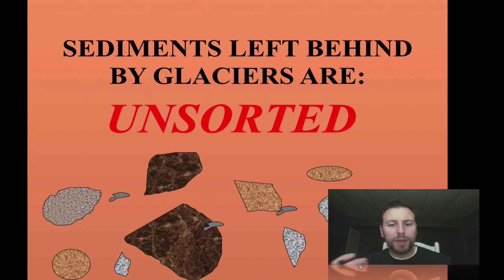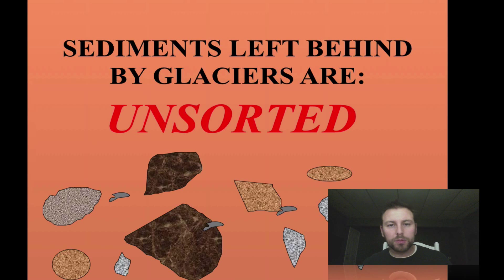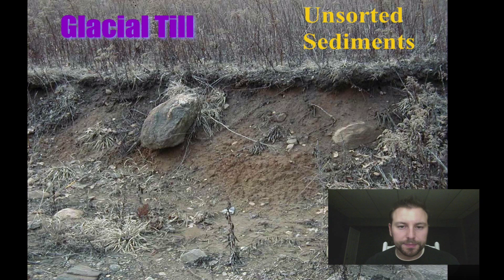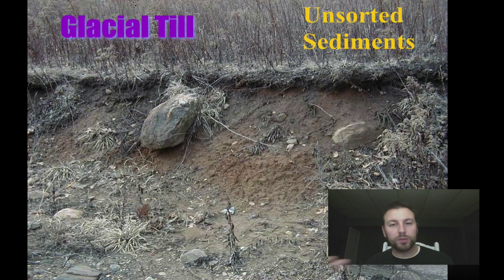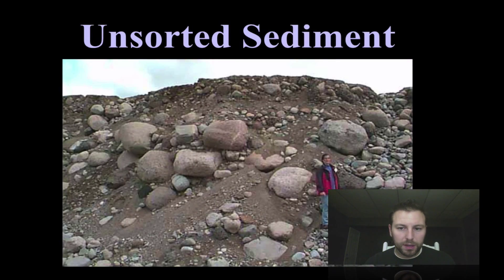When we have a mixture of different sediment sizes, we call that unsorted — there's no rhyme or reason to sediment size; large is mixed with small. Glacial till is nothing more than unsorted sediments, and we see this here on Long Island — larger mixed with smaller sediments, as shown with a person standing next to these sediments.